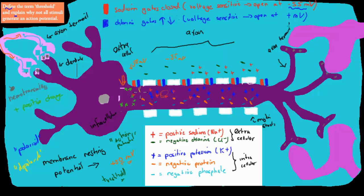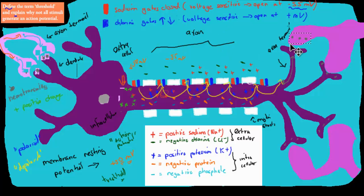So what you basically have is a jumping of the actual impulse from one point to the next, going all the way down until it gets to the end at the axon terminal. That's where this change in potential would cause the calcium gates to open. The calcium then goes down and changes the shape of the axon terminal, meaning the neurotransmitters flood over to the next dendrite — a new neuron — and the whole cycle starts again.